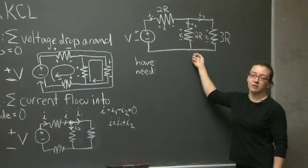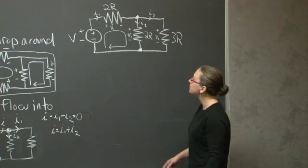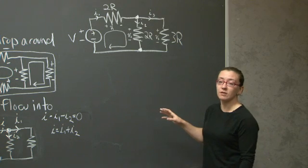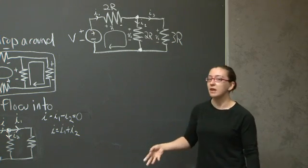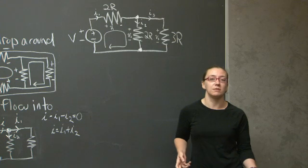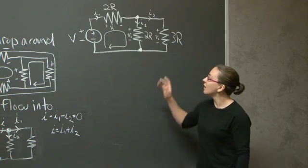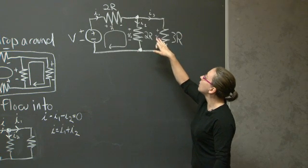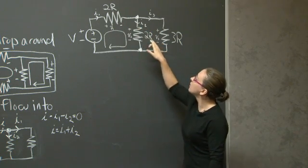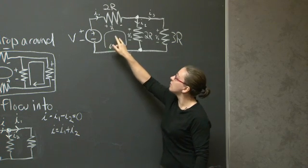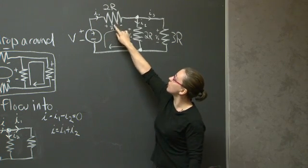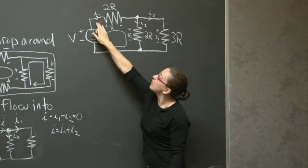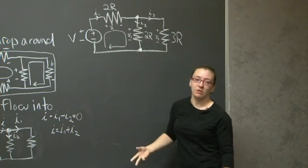Let's practice on this particular circuit. One thing to note is that when solving circuits in general — both when you want TA help and when you're solving for a midterm and want partial credit — you want to label all of your nodes, all of your elements, and all of the currents you're interested in solving. I've got the voltage drops across this resistor, this resistor, and this resistor labeled, as well as the currents I'll also be solving for.